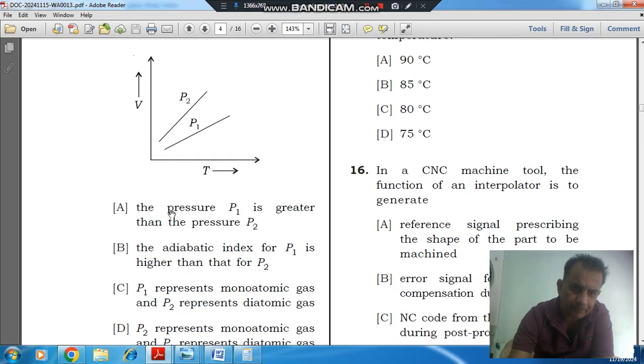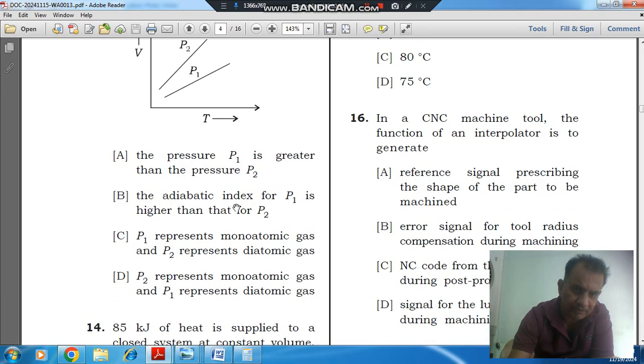Option A: pressure P1 is greater than the pressure P2. Option B: adiabatic index for P1 is higher than that for P2. Option C: P1 represents monatomic gas and P2 represents diatomic gas.